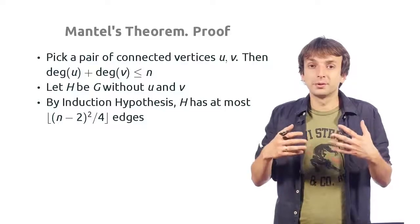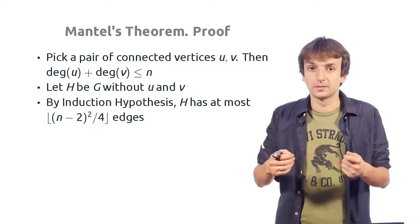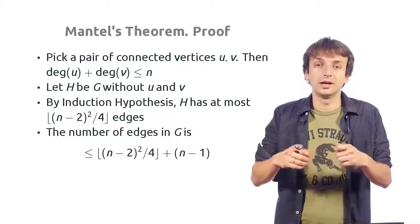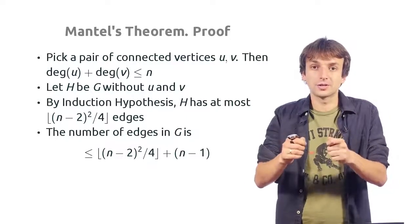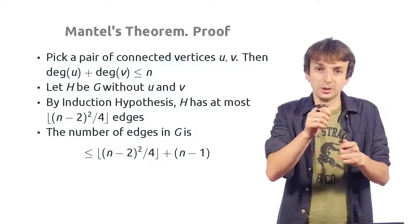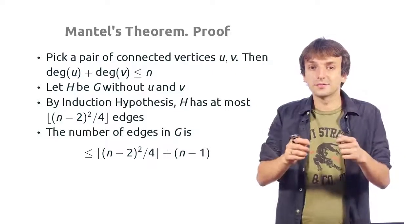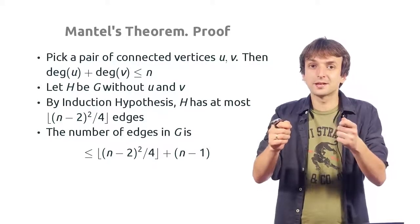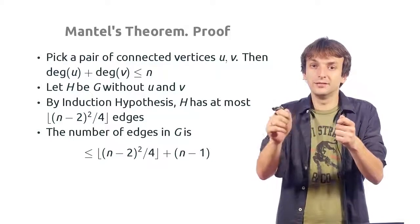Let us now count the number of edges in G. It has all edges from H and also edges going from the vertices u and v. We know that sum of their degrees is at most n.